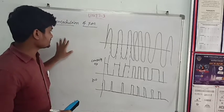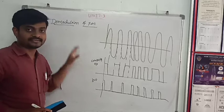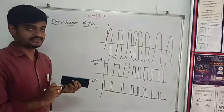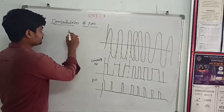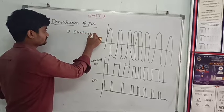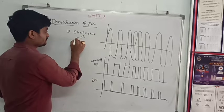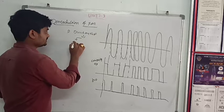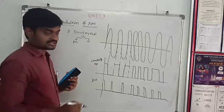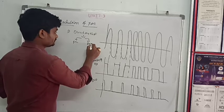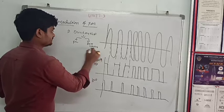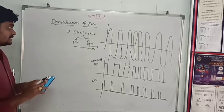Good morning to all. In this class I will explain demodulation of FM using the direct method. The direct method has two types: one is the frequency discrimination method, and the second one is the zero crossing detector. These are the two direct methods.